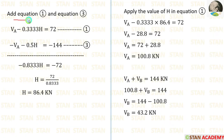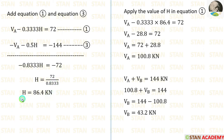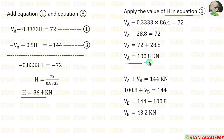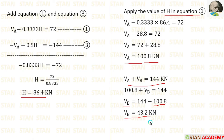Adding Equation 1 and Equation 3, the VA terms cancel. Simplifying 72 − 144 = −72, we get the horizontal thrust H = 86.4 kN. Substituting H into Equation 1 gives VA = 100.8 kN, and from VA + VB = 144 we get VB = 43.2 kN.